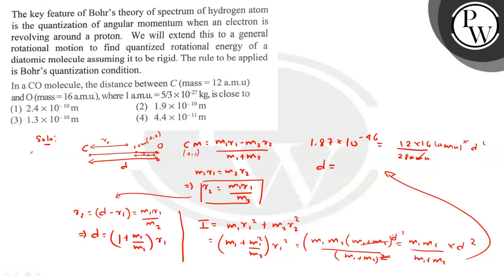1.3×10⁻¹⁰ meters. So the answer is d = 1.3×10⁻¹⁰ m.